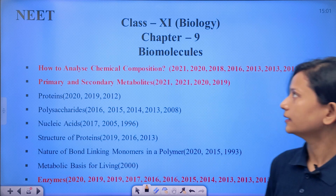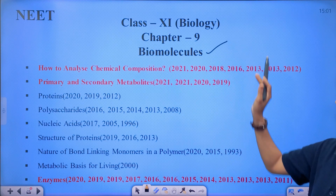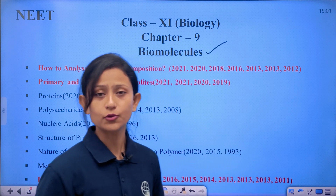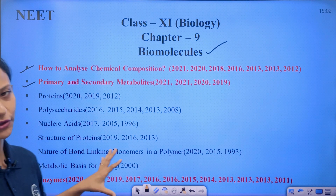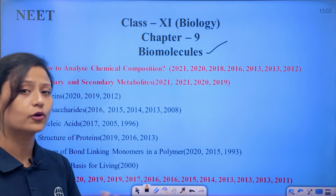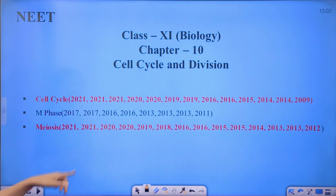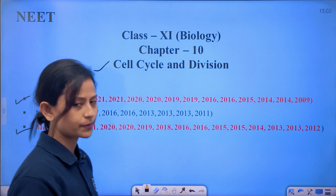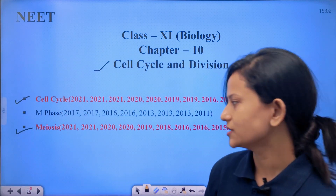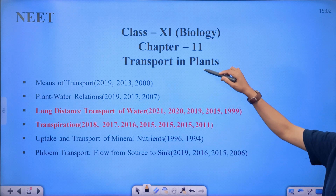Next chapter: Biomolecules. The important topics are how to analyze chemical composition, primary and secondary metabolites, and enzymes — these are very important from a NEET point of view. Next, Cell Cycle and Division: the cell cycle obviously, with questions on haploid and diploid. Meiosis is also a very important topic with many questions.